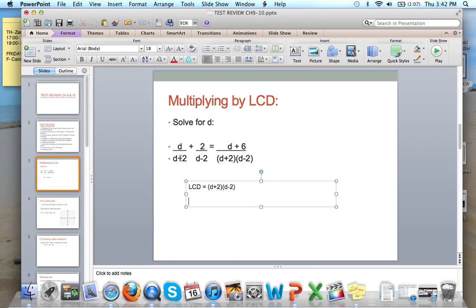What we then do is we then multiply times each of these individually and cancel out. So if we multiply this times d plus 2, d minus 2, the d plus 2's cancel out. What we get is d times d minus 2. Same thing for the next one. Plus 2, here the d minus 2's are going to cancel out. So we get d plus 2 equals just d plus 6.